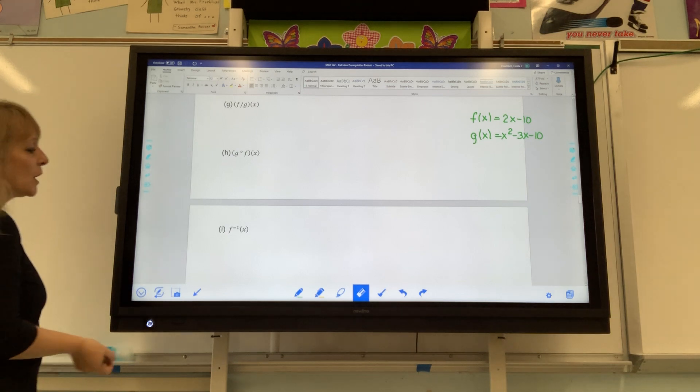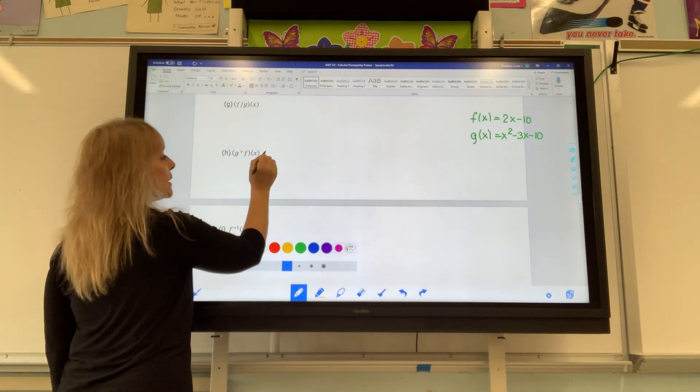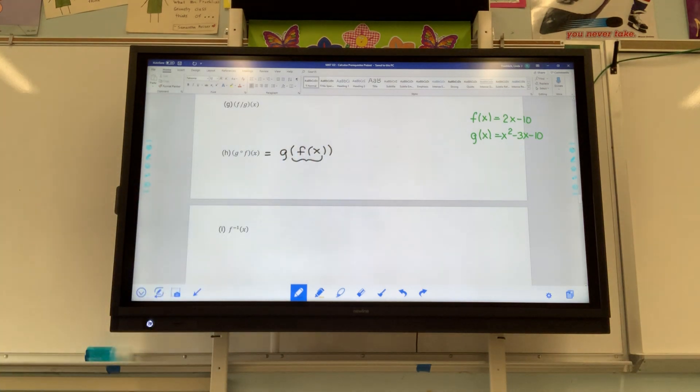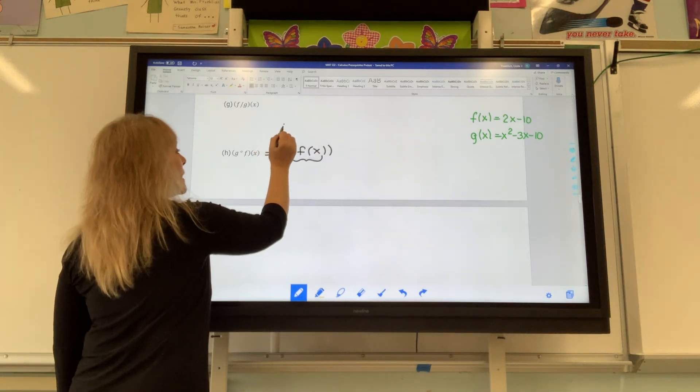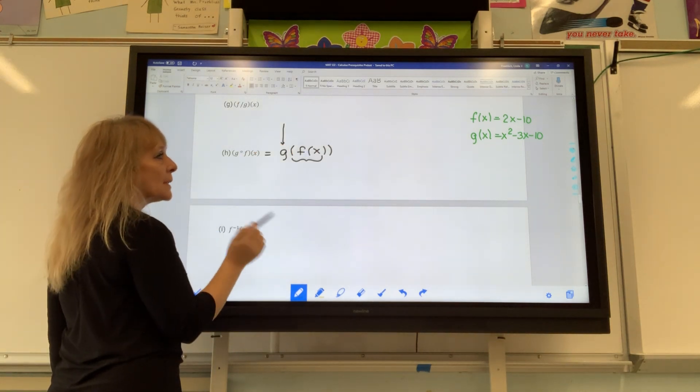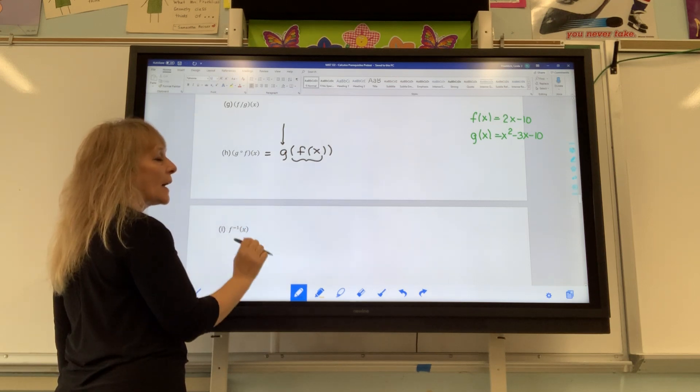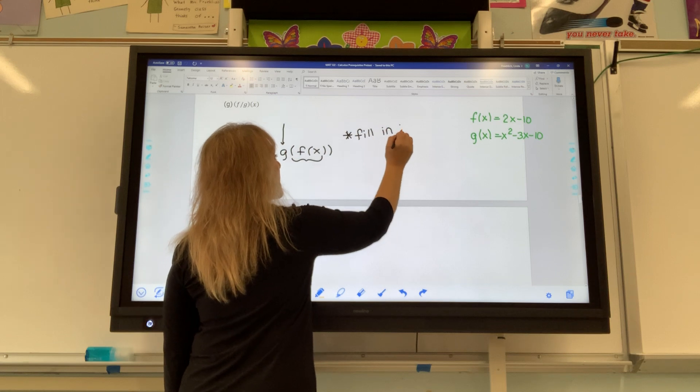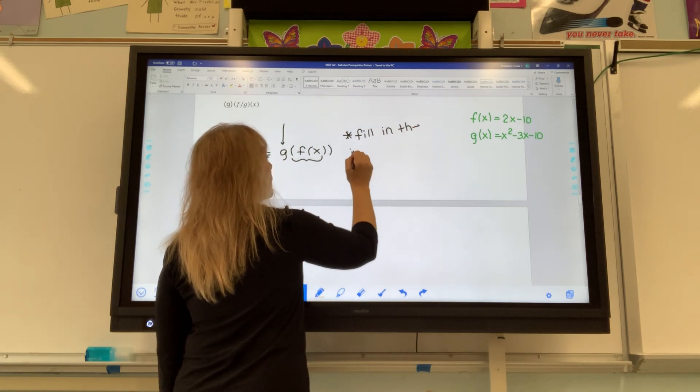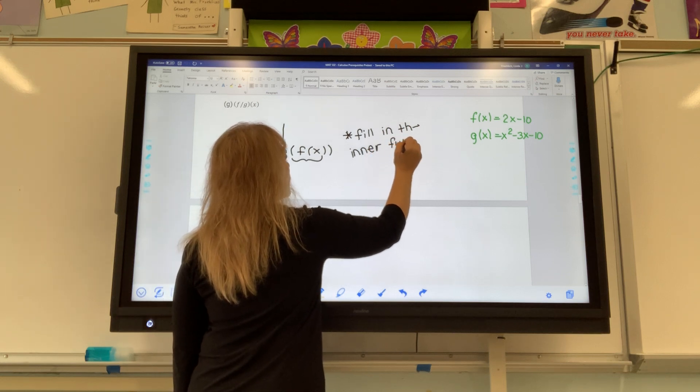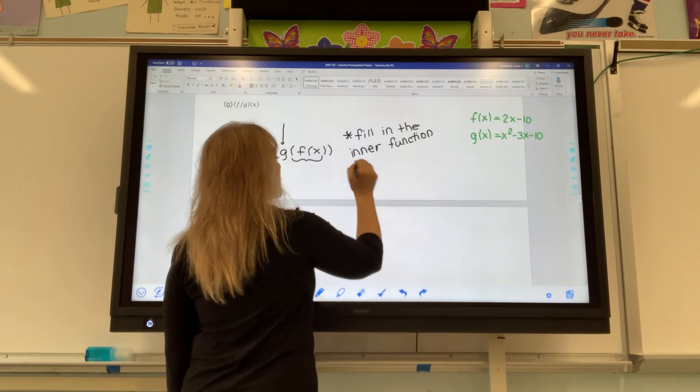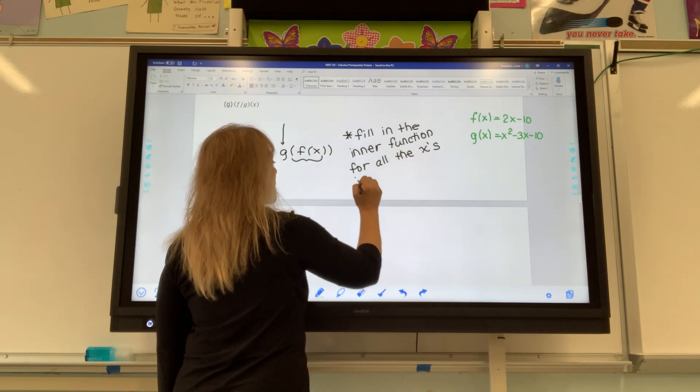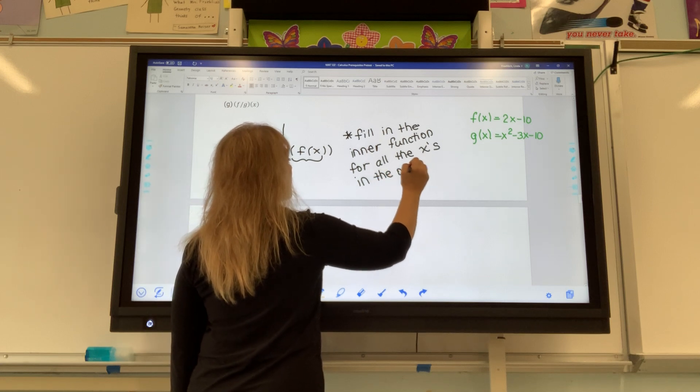I'm up to letter H. We call this G of F of X. F of X is the inner function, obviously. G of X is the outer function, obviously. This means fill in the inner function for all the X's in the outer function. So I have the outer function and I filled in the inner function for all the x's.